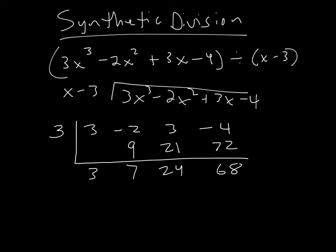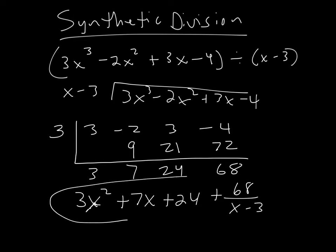So all we do now is we rewrite it. It's 3x squared plus 7x plus 24 plus the remainder, so that's 68 over x minus 3. And we're done. That's called synthetic division. Basically just doing it really fast and ignoring all the variables, and then you put them back in at the end. Just put all your x's back in at the end of the problem.